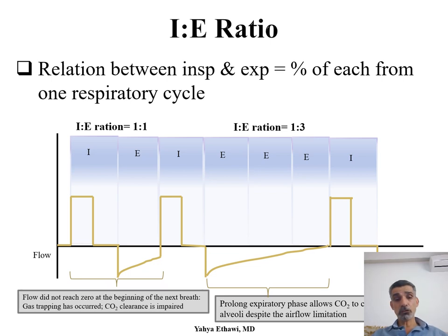Look at the inspiration here — it goes back to zero and there is a pause. Very nice, there is a pause before and a pause after. It goes up and down, a very nice inspiratory time. Look at the expiration going out — before it reaches back to zero, a second inspiration starts. Imagine if you want to breathe out and I give you a blow of air — you would be very uncomfortable. Therefore, that expiratory time is not proper for this baby; the ratio is 1 to 1.